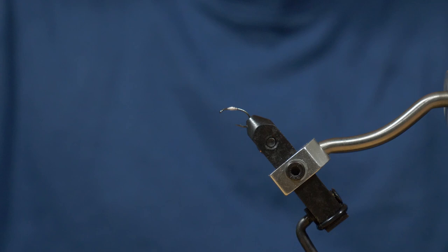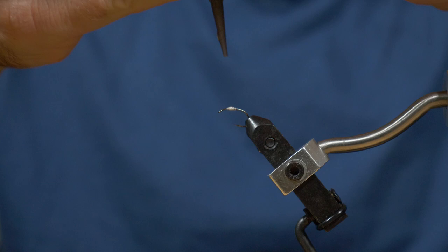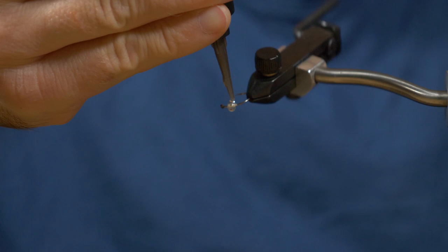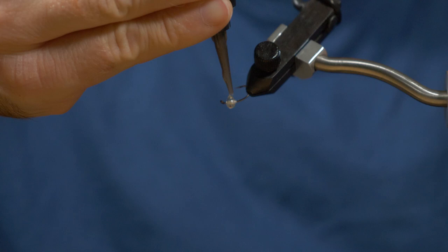Now you get your UV thick fly finish and you drop it on there and immediately start rotating the vise. A rotary vise is very important here, and just add the material as much as you need to get the egg the size you want.